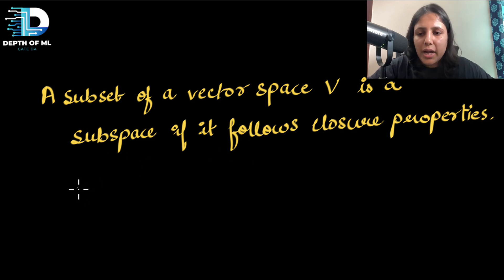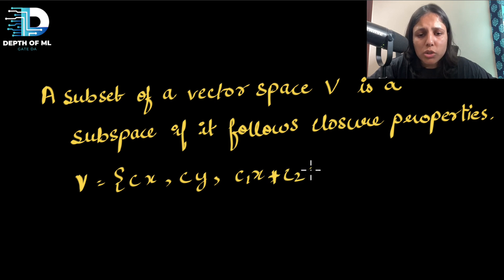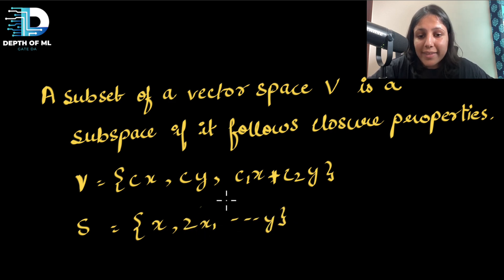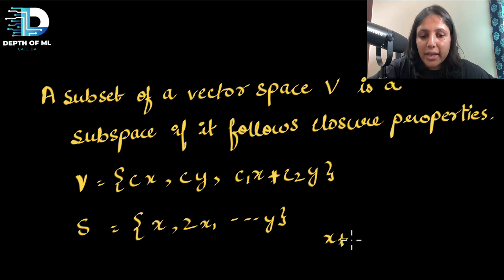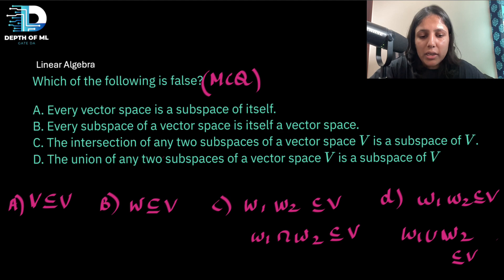For example, suppose a vector space V contains all multiples of X, all multiples of Y, and all multiples of X and Y together. If I define a subset S containing only X, 2X, and Y — this is a subset but not a subspace, because no linear combination like X + Y is defined in it. This illustrates the difference between a subset and a subspace.